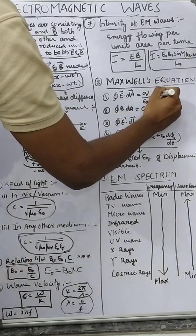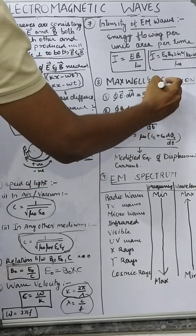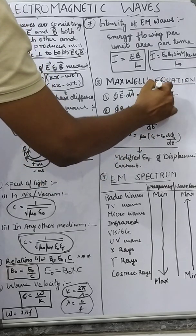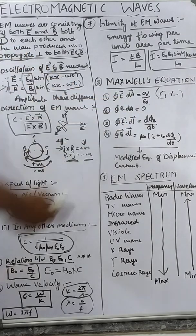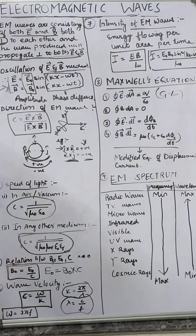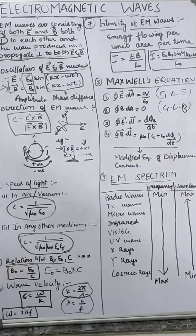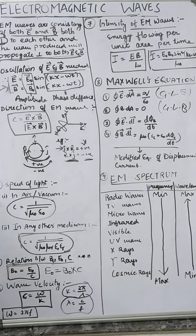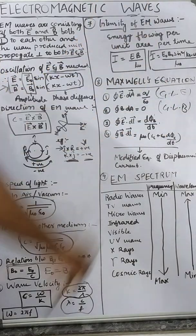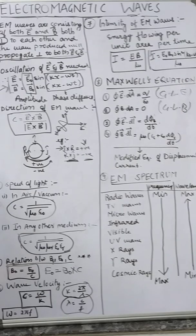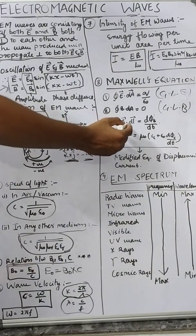Maxwell's equations: the closed integral of E·dl = −dΦB / dt. This is Gauss's law. Closed integral of E·dl = 0. This will be Gauss's law for the magnetic field. Change in magnetic field will give you current.